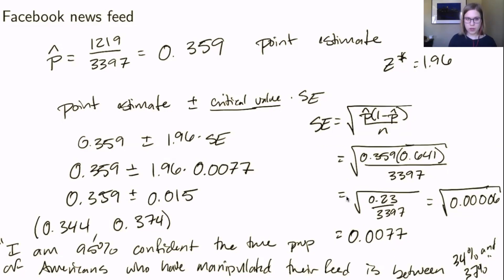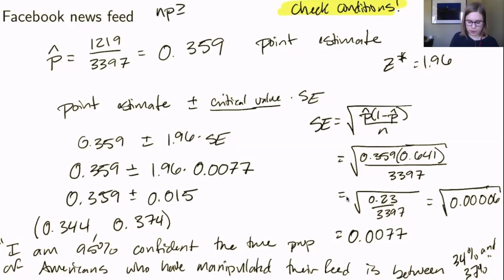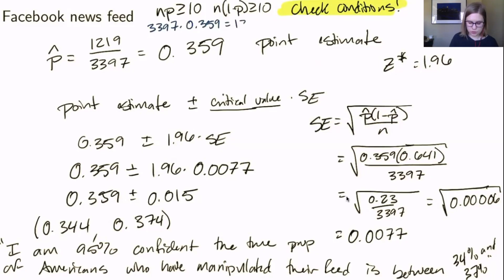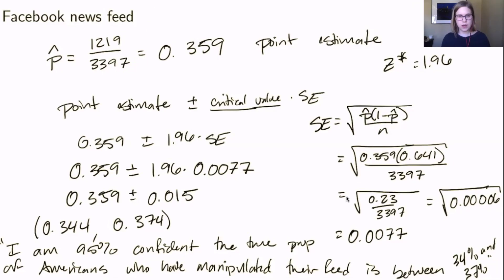One thing I forgot: we need to check the conditions. For a single proportion confidence interval, the conditions are n times p greater than or equal to 10, and n times 1 minus p greater than or equal to 10. Using n equals 3397 and p-hat equals 0.359, we get 3397 times 0.359, which is 1219, and 3397 times 0.641, which is 2178. Both conditions are satisfied.